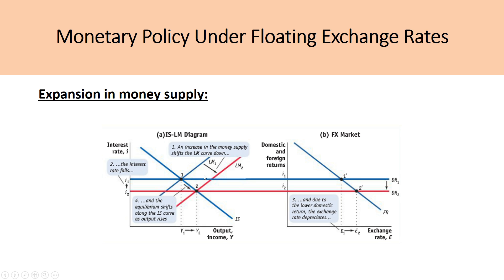Let's look at this through a graph. We're starting at initial equilibrium at point 1, which is at output level Y1 and interest rate I1. With an expansion in the money supply, the LM curve shifts to the right, because in the short term prices are fixed. If we move the MS line to the right, the equilibrium interest rate will fall. So the LM curve shifts right and down the IS curve to a new equilibrium point 2. At this equilibrium, the interest rate falls and output expands. In the FX market, this fall in the interest rate lowers domestic returns, and therefore the new equilibrium exchange rate is at a higher E — that represents a real depreciation.